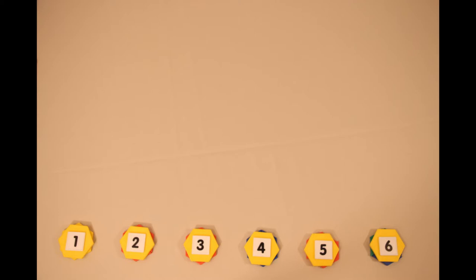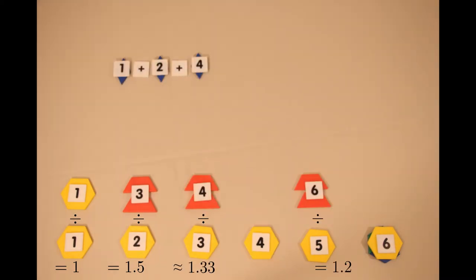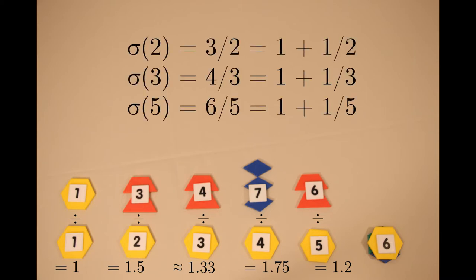For 1, there's obviously only one factor, so the sum of the factors is 1, and the abundancy is 1. 2 is a prime, so it has two factors, 1 and 2. 3 and 5 are also primes, so they'll behave similarly. While 4, as a square number, has an odd number of factors. The abundancy of each prime number is just equal to 1 plus the reciprocal of the prime that we started with. The 1 comes from the itself divided by itself part, and the 1 over p comes from the 1 divided by itself part.